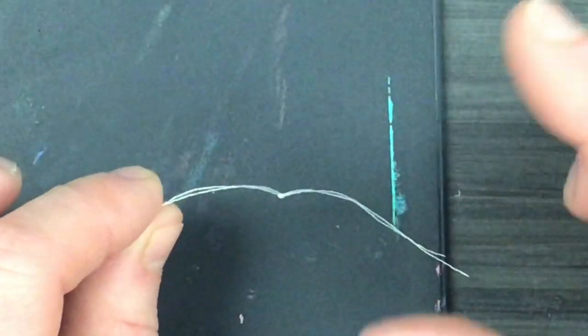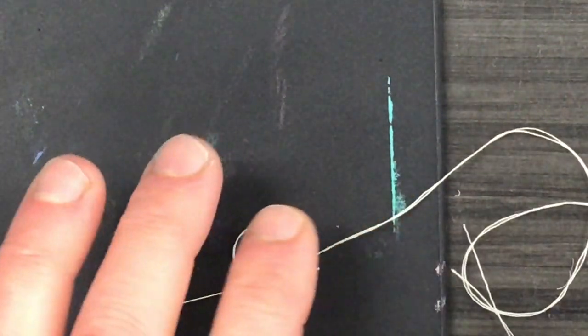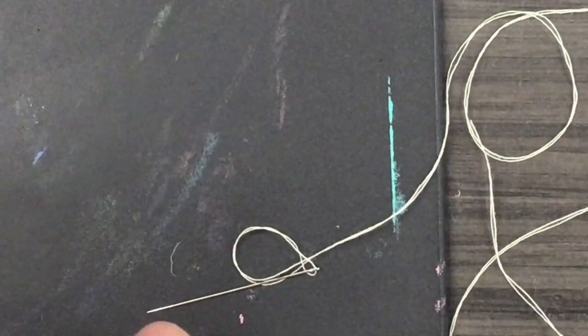Now when I've knotted my thread and I've threaded my needle, I'm going to take a picture of this and put it on Seesaw so I can see the knot and so I can see your needle.